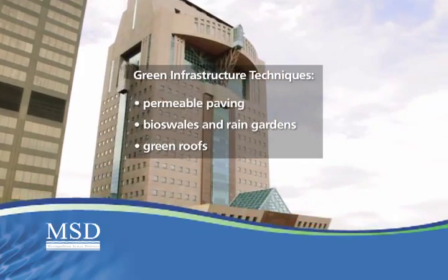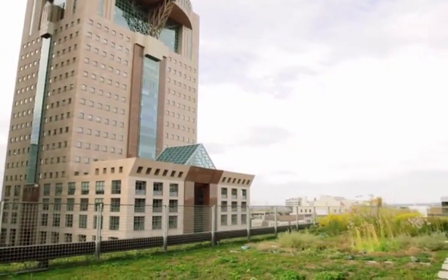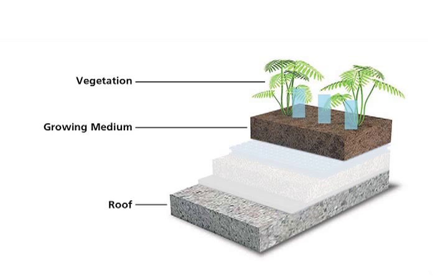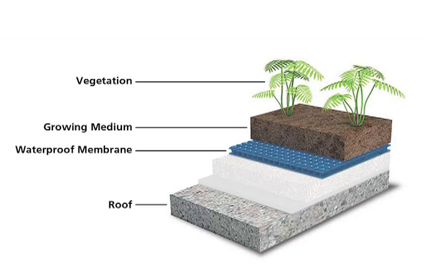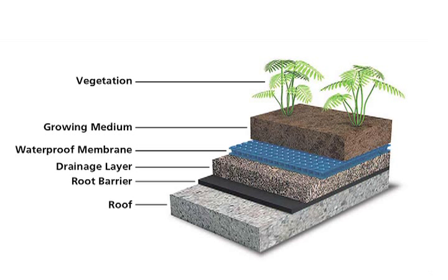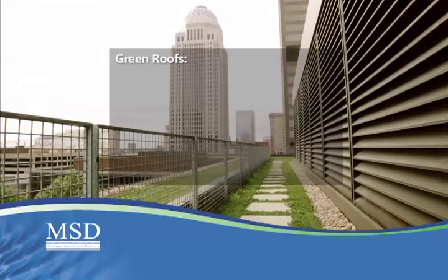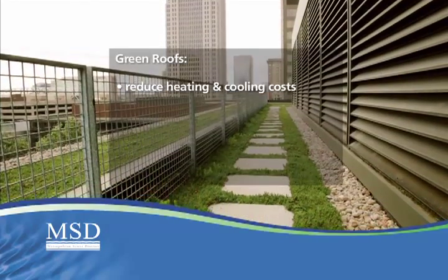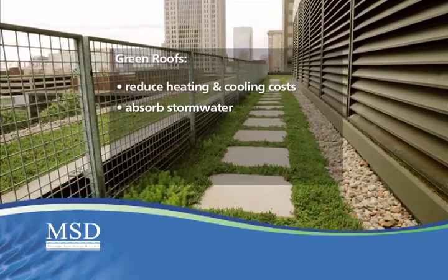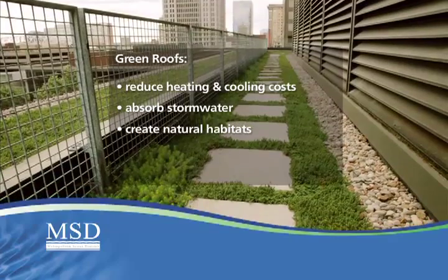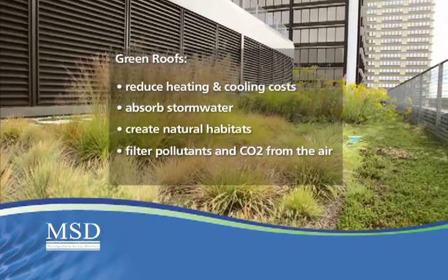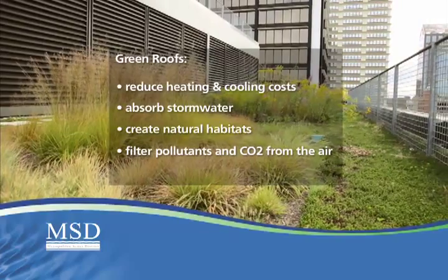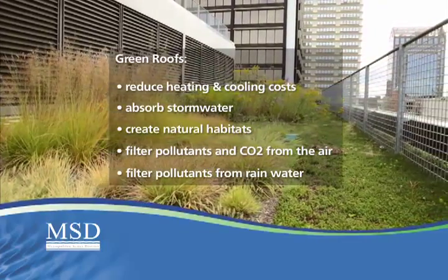Green roofs are partially or completely covered with vegetation and a growing medium planted over a waterproofing membrane. They may also include additional layers such as a root barrier, a drainage system, or an irrigation system. Green roofs reduce heating and cooling costs by providing additional insulation, absorb stormwater, create natural habitats, filter pollutants and carbon dioxide out of the air, and filter pollutants out of the rainwater.